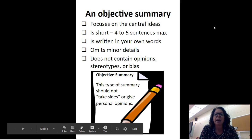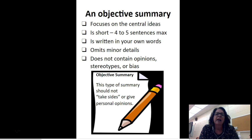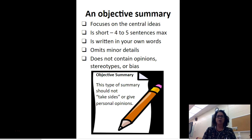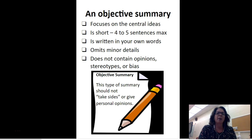Remember the skittles where I asked you to tell me how many skittles are in the jar? You made a prediction — your prediction was a subjective statement. My actual number was an objective statement. Then when you were asked for your favorite color and you told me, that was a subjective statement. So we want to see what an objective summary has in it.